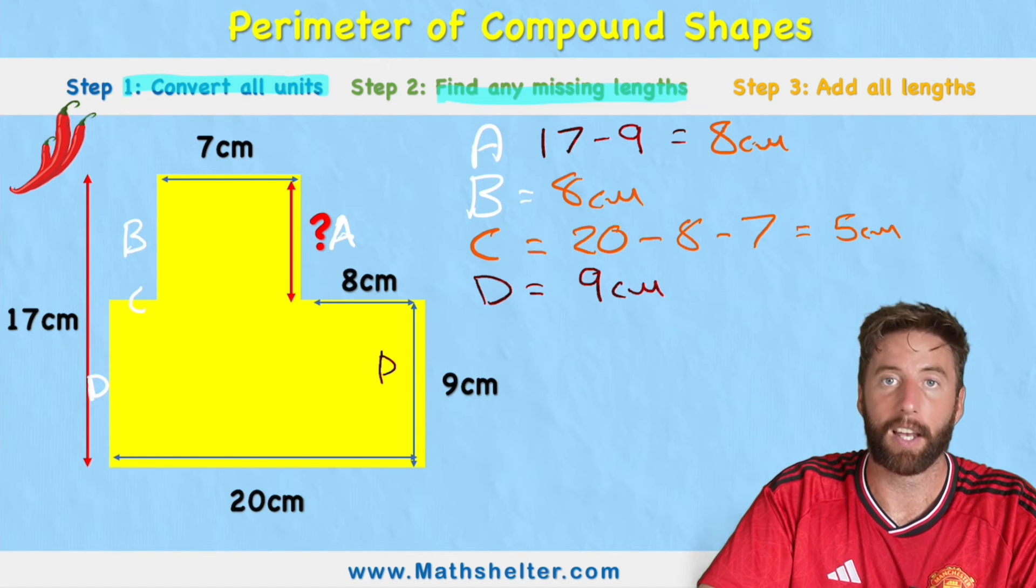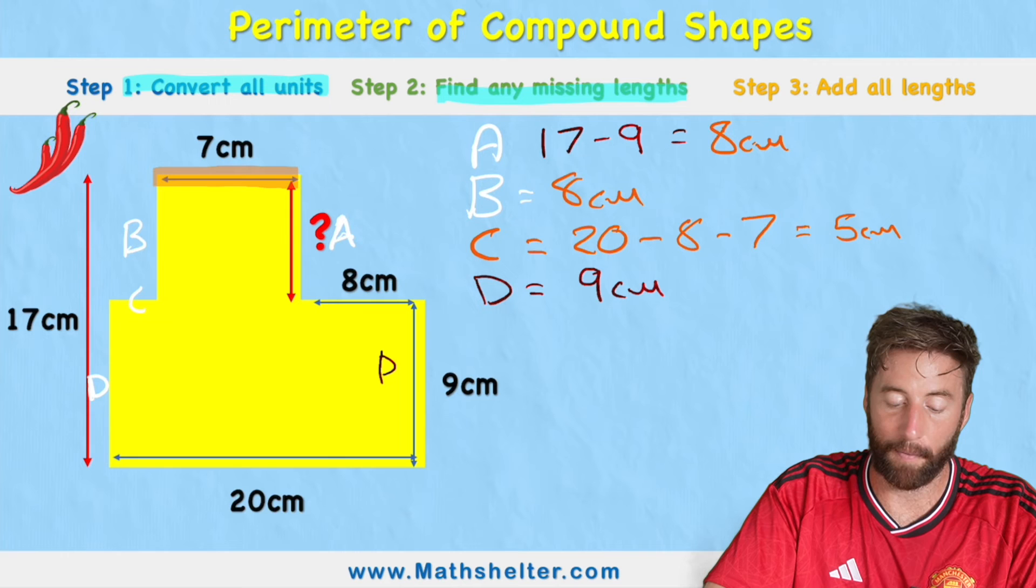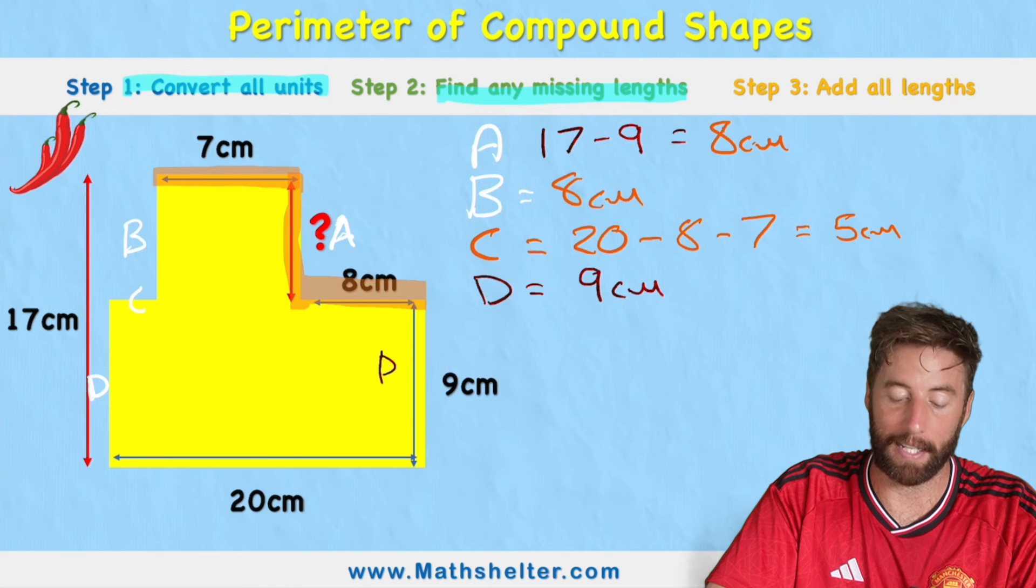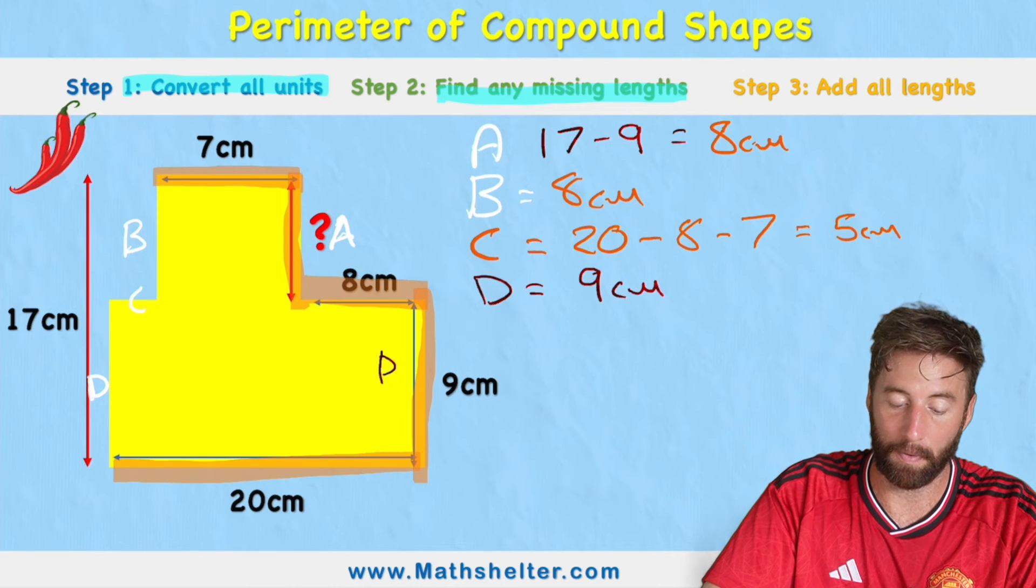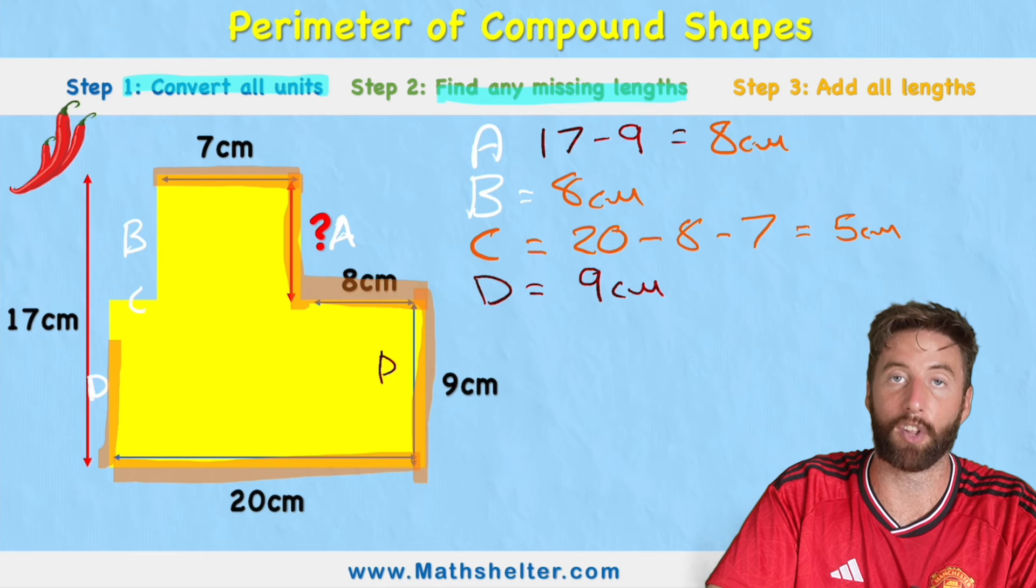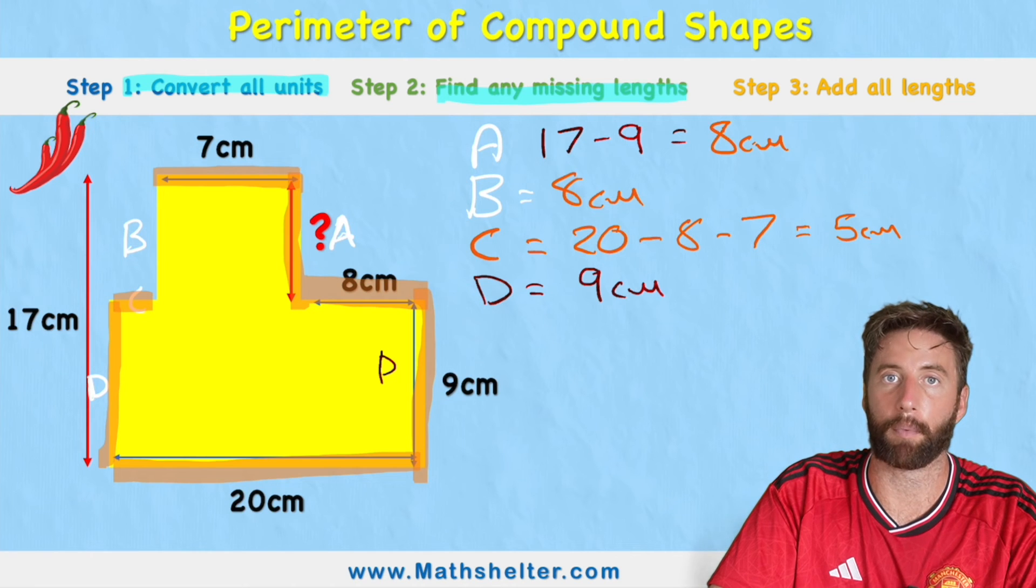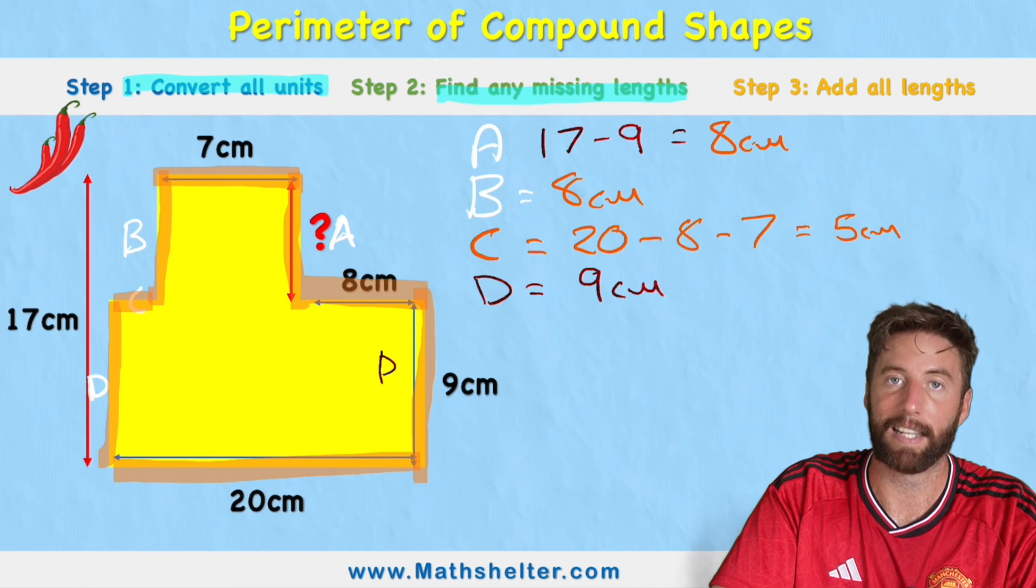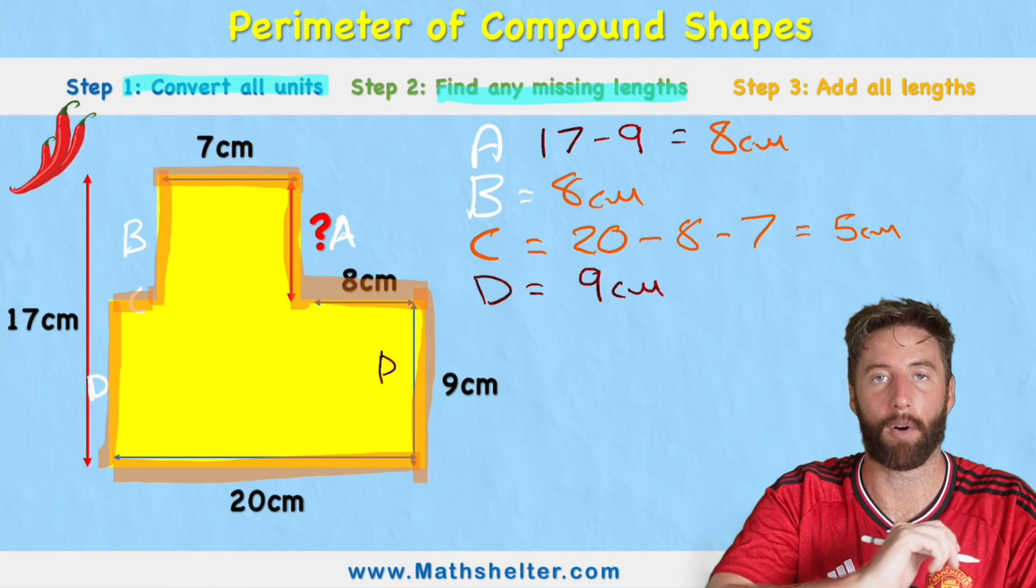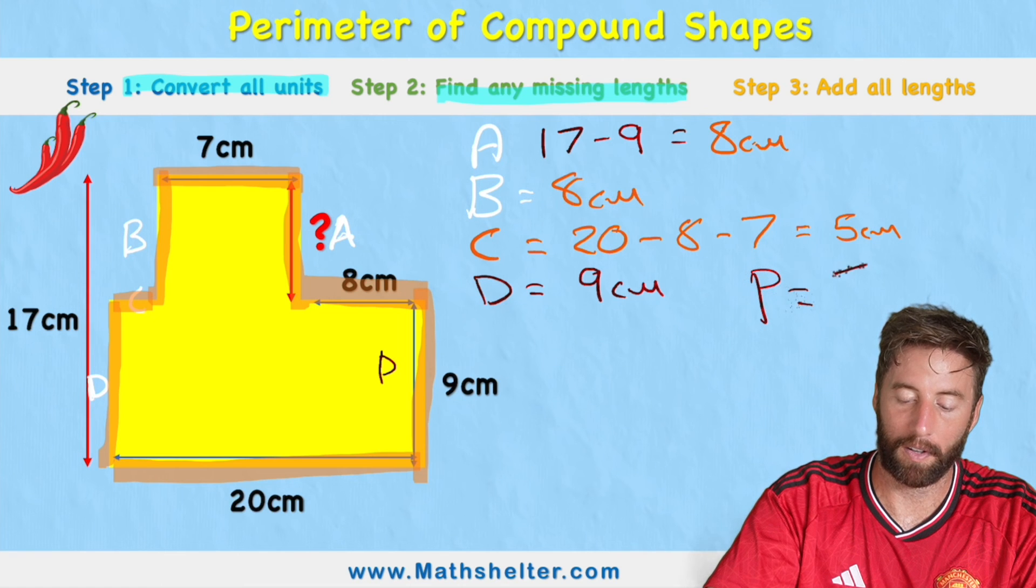Now we're ready to add all of our lengths, and this time what I'm going to do is I'm going to draw around my measurement adding as I go. So I have 7, and I'm adding A which is 8, so 7 plus 8 is 15, and I'm adding another 8, that's 23, then 9, so 32, then adding 20, so 52. Now I'm coming up to D, which is another 9, so 52 plus 9 is 61, plus C which we said was 5, so 61 plus 5 is 66, and then plus my B which is 8. 66 plus 8 is 74. So I think that this perimeter of this shape is 74 centimeters.